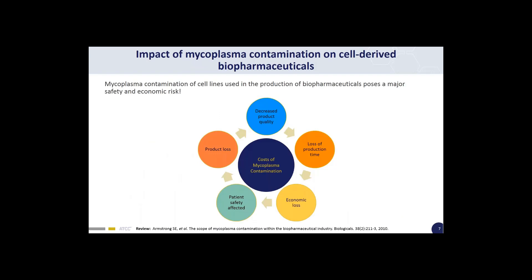In addition to the scientific impacts of mycoplasma contamination, there is also an impact to the biopharmaceutical industry. Cell lines have been used to produce a number of biological products for therapeutic or medicinal use, including viral vaccines and monoclonal antibodies. Because of the damaging effects that mycoplasma strains have on cell lines, contamination presents a significant safety and economic risk. If the mycoplasma contaminant is present in the final biological product, it can directly affect patient safety. Furthermore, there can be product loss and a decrease in product quality, resulting in significant costs — thousands of dollars — and loss of months of invaluable production time.